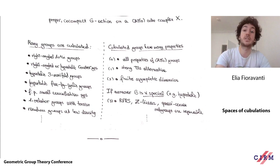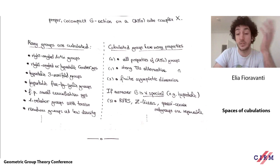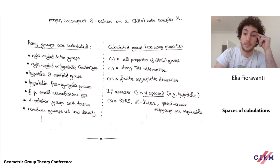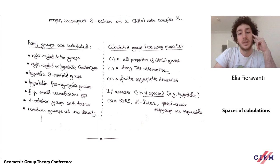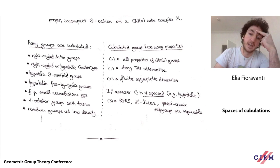In addition, cubulated groups satisfy the Tits alternative, which was originally shown by Sageev and Wise — meaning every subgroup of a cubulated group is either virtually abelian or contains a non-abelian free subgroup. Also, cubulated groups are known to have finite asymptotic dimension, shown by Wright, which implies the Novikov conjecture.